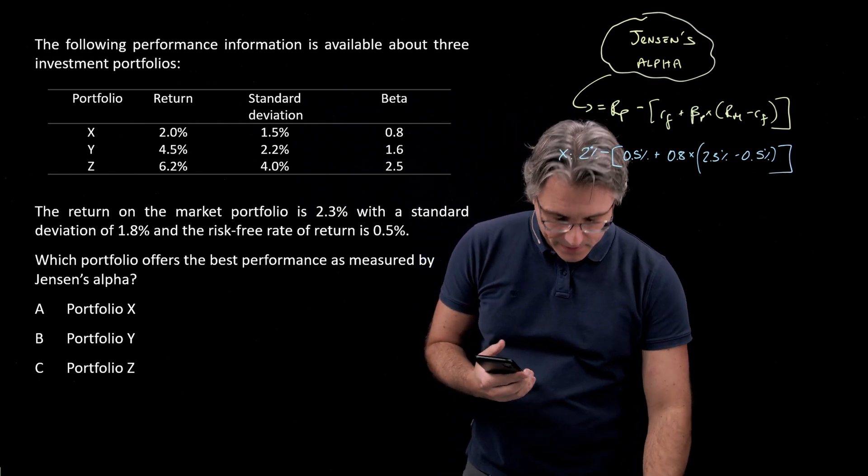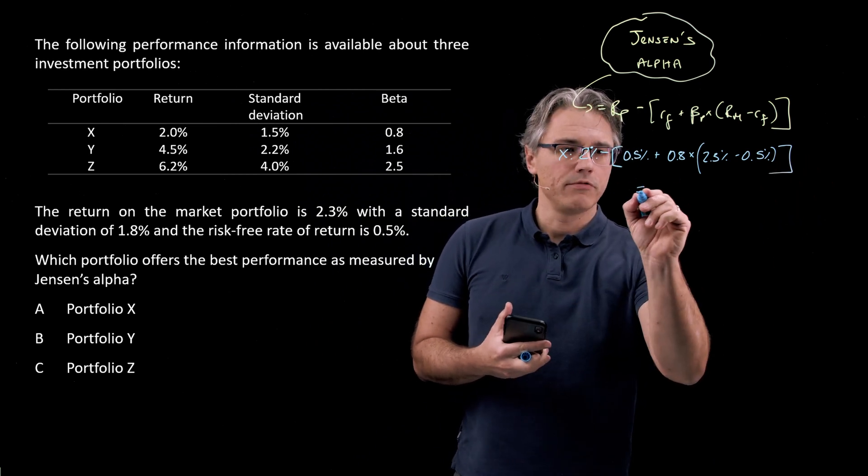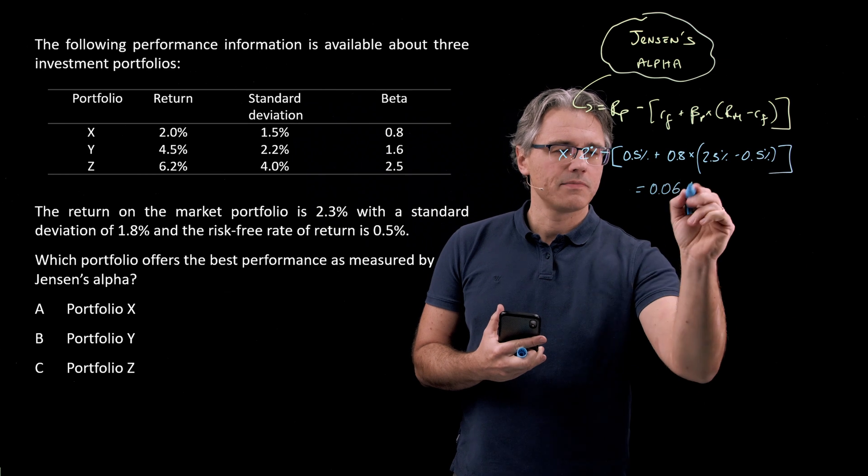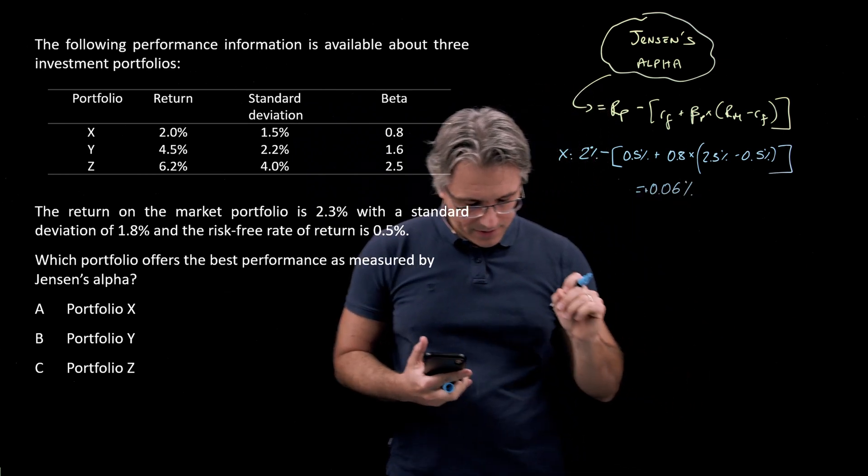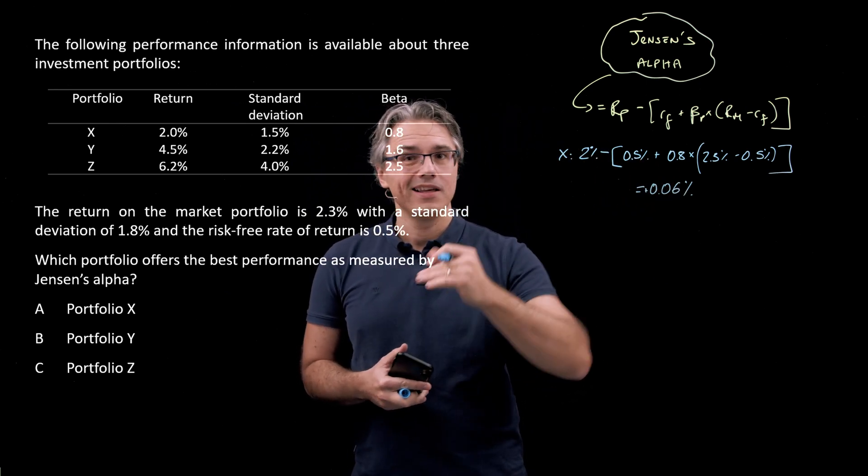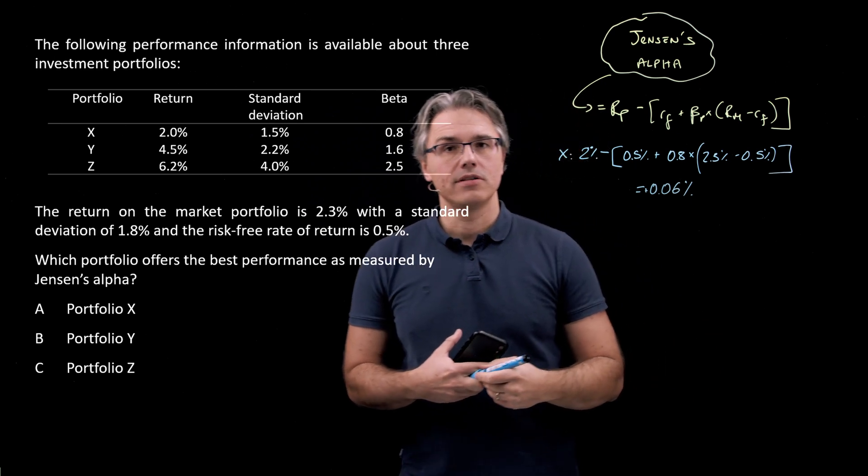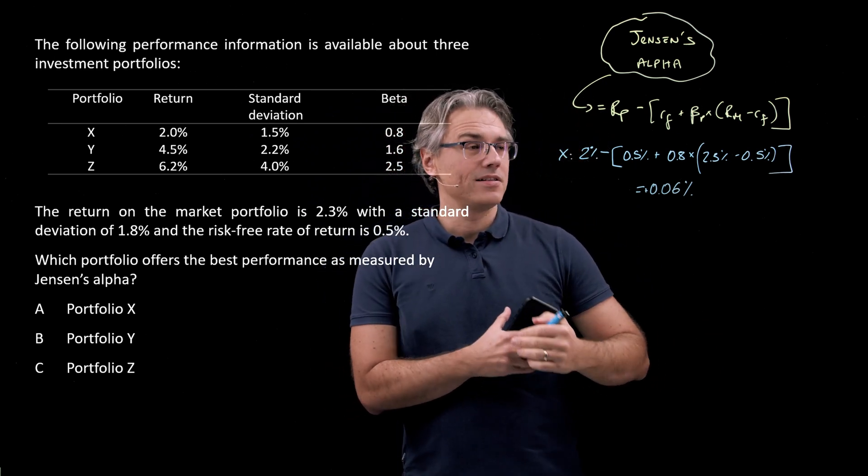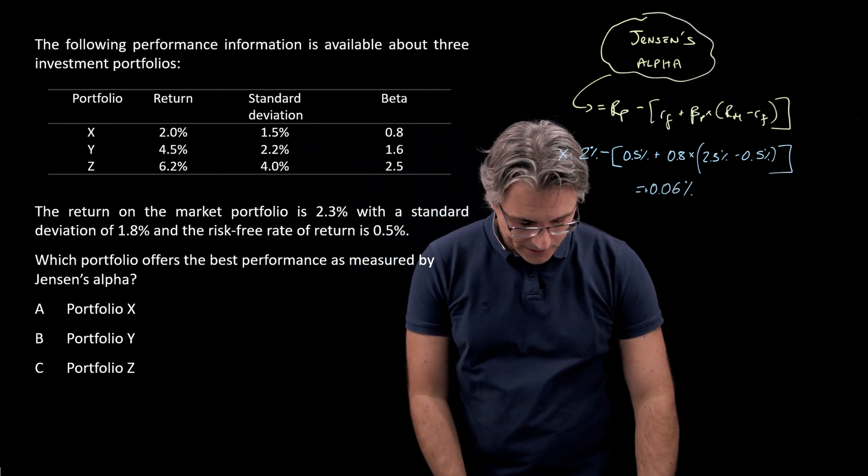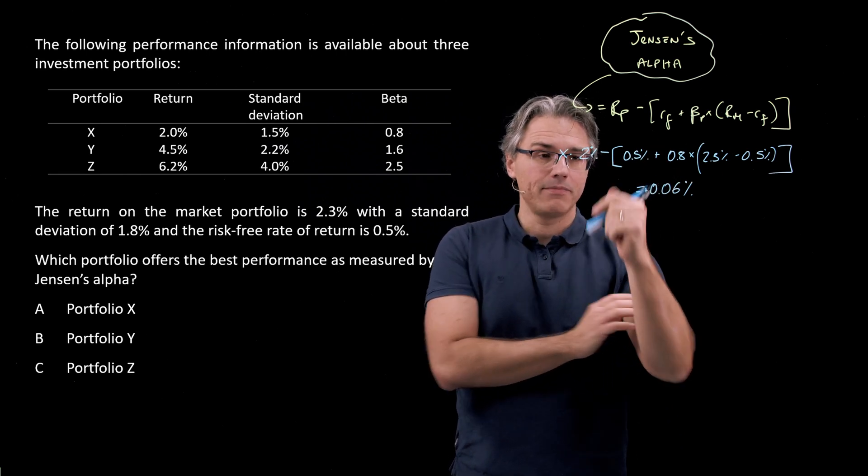Plus 0.5. And I see a result equal to, let me write this down over here, it's going to be 0.06% and it's positive. So this suggests a little bit of alpha, very small, but a little bit of excess performance on a risk-adjusted basis, where as risk we take into account systematic risk only. So better than the required rate of return from the CAPM model.